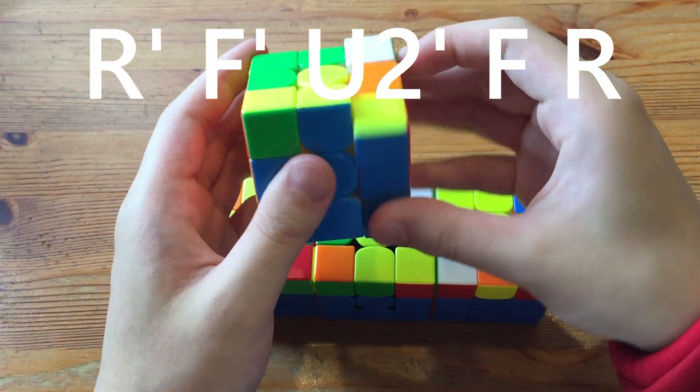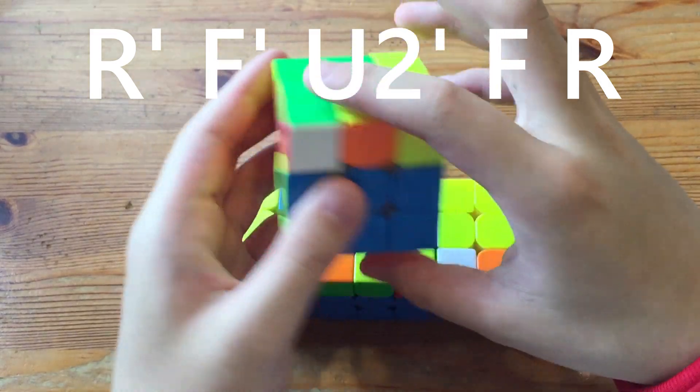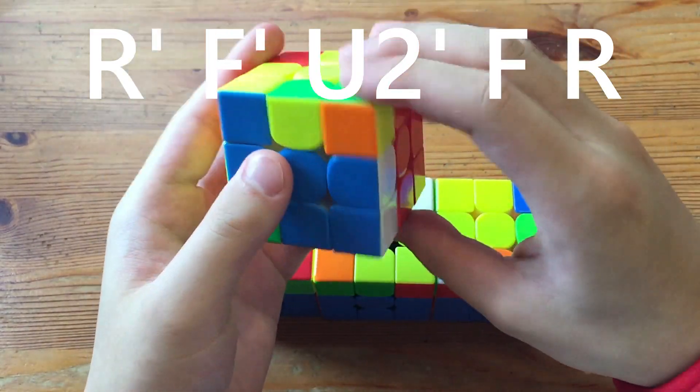And now this one you just do R', and now that you see that if you do an F', this pair gets paired up and then you just U2' FR to insert.